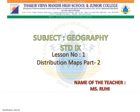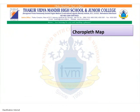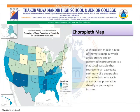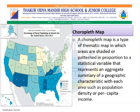Today we are going to study the Choropleth Map — the ones in which each region is filled with a color that represents a value. A choropleth map is a type of thematic map in which areas are shaded or patterned in proportion to a statistical variable representing an aggregate summary of a geographic characteristic, such as population density or per capita income. In the given figure, we can see the percentage of rural population is given.